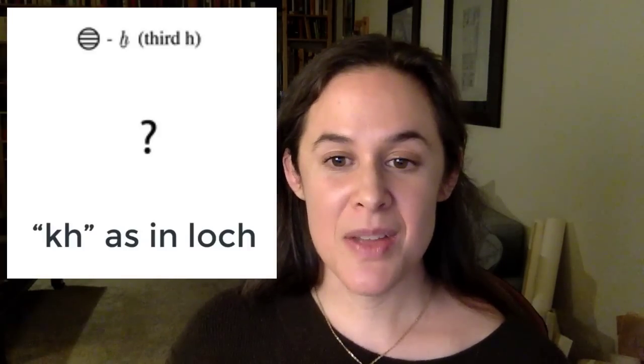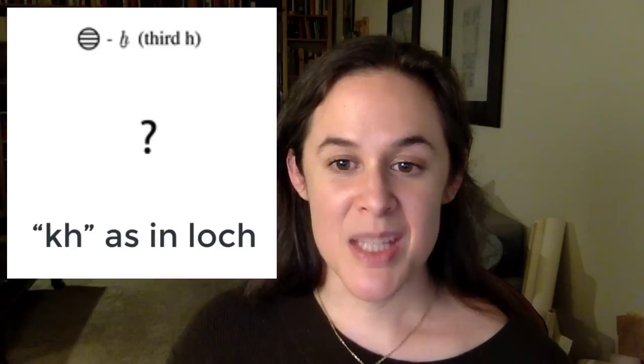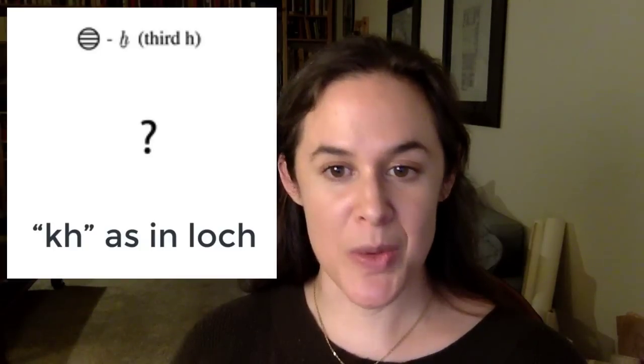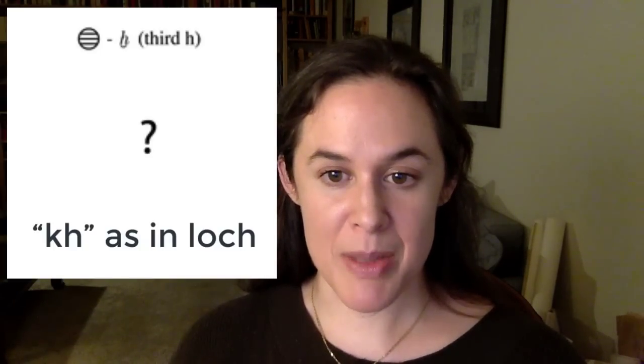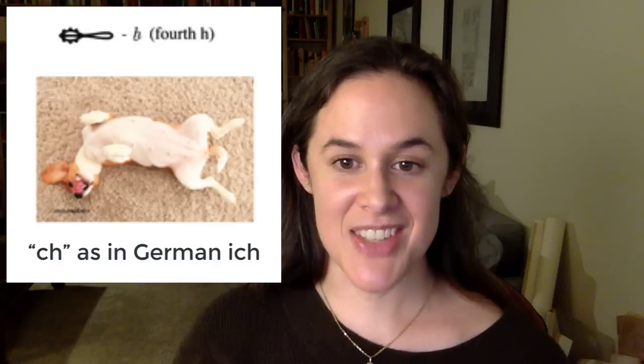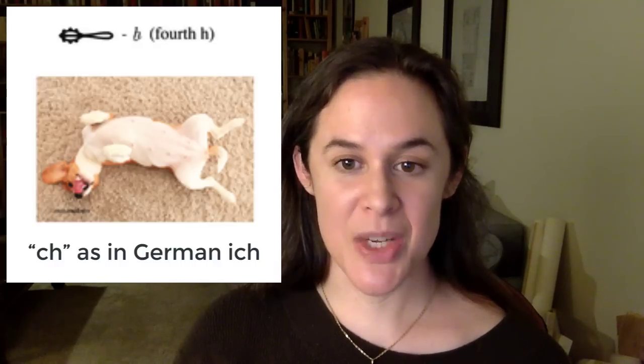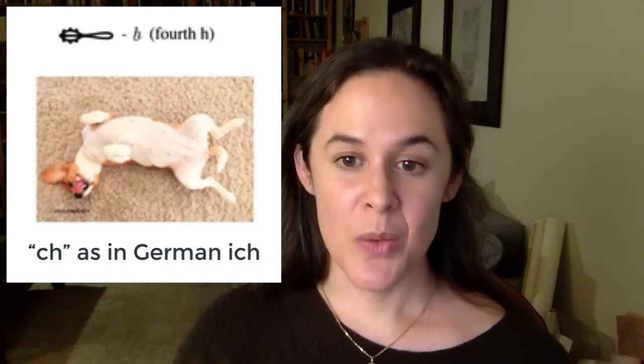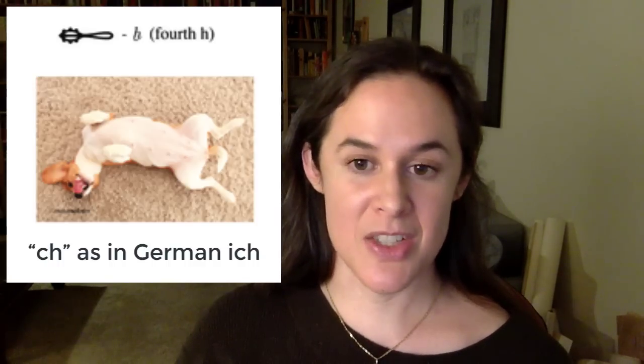The next H-like sound we simply call third H. It's a sound found in Arabic but also in other languages. It's pronounced like the CH in the Scottish word 'loch.' We don't actually know what the hieroglyph for third H depicts — sometimes people describe it as a placenta, though I'm not sure how strong the evidence is. Our final H-like sound is not found in Arabic but is found in German. It's pronounced the same way as the CH in 'ich,' and I'm including links where you can hear it pronounced.